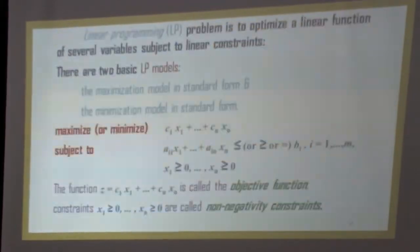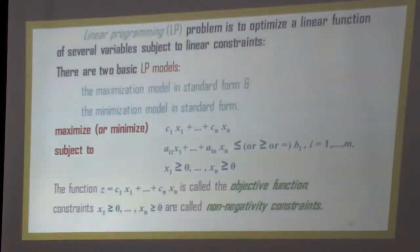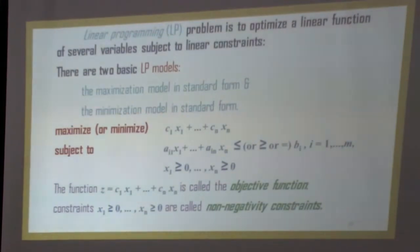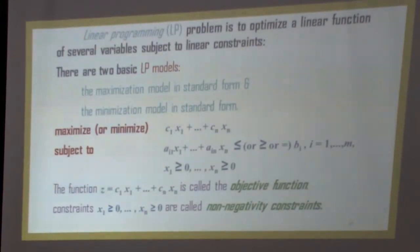There are two basic LP models: the maximization model in standard form and the minimization model in standard form. The general mathematical formulation of LPP has the objective function: optimize Z (maximize or minimize) = C₁X₁ + ... + CₙXₙ, subject to the inequalities Aᵢ₁X₁ + ... + AᵢₙXₙ ≤, ≥, or = Bᵢ, where i = 1, 2, ..., M — these are called the constraints. The constraints X₁ ≥ 0, X₂ ≥ 0, ..., Xₙ ≥ 0 are called the non-negativity constraints.